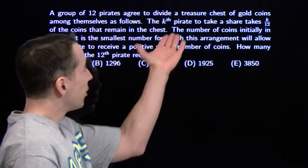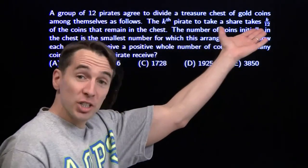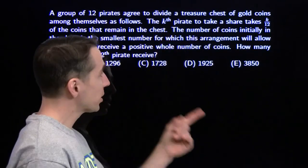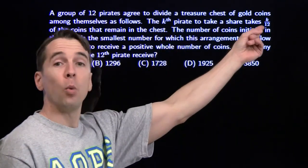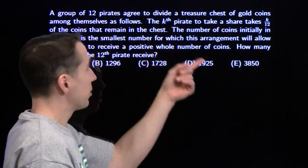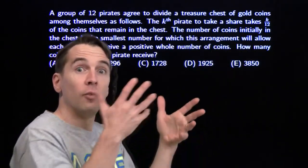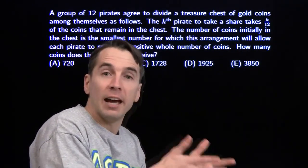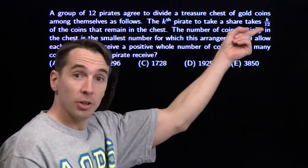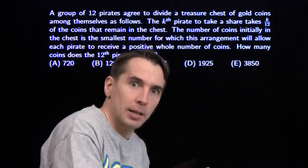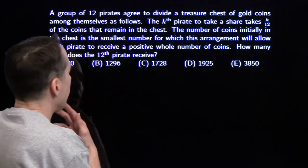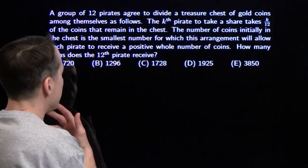What we've got here are 12 pirates. They're going to divide up a treasure chest of gold. The first pirate takes 1/12 of the gold in the chest. The second pirate takes 2/12 of whatever's left after the first pirate is finished. The third pirate takes 3/12 of whatever's left after the second pirate, and on and on.